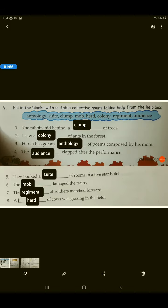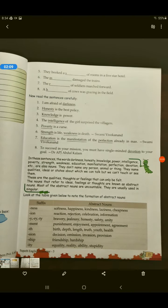Thik hai, the regiment of soldiers. We all know what is a regiment of soldiers. A herd of cows. A group of cows is called a herd of cows. Alright, I hope it's clear to all of you. Now we will start with the chapter.